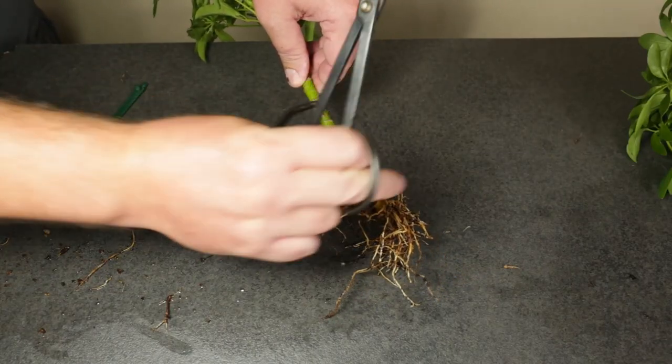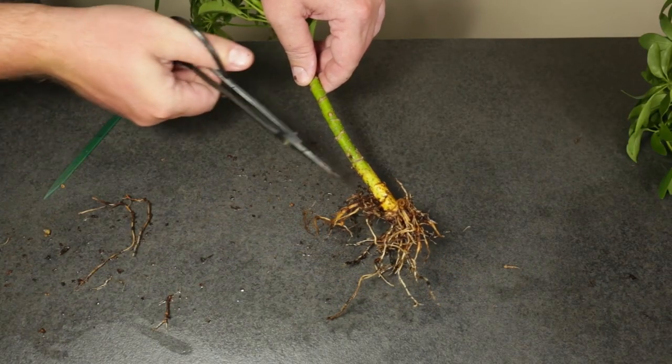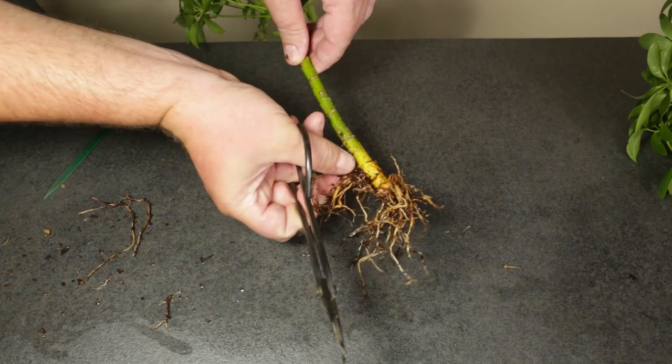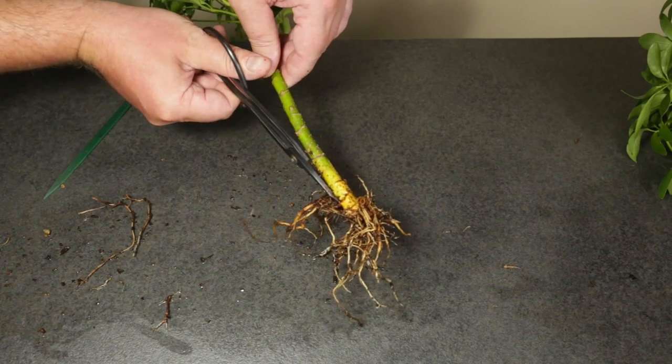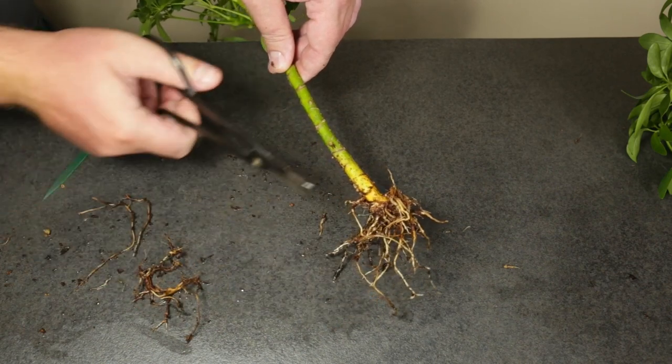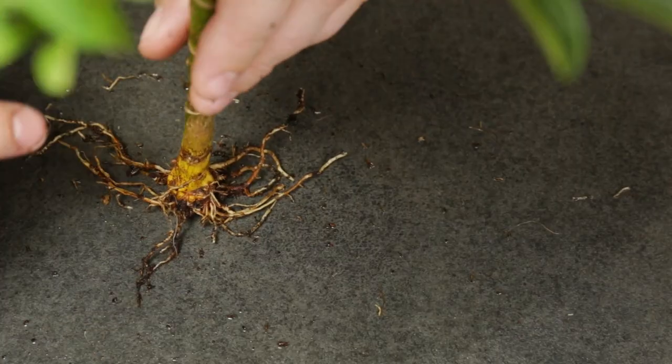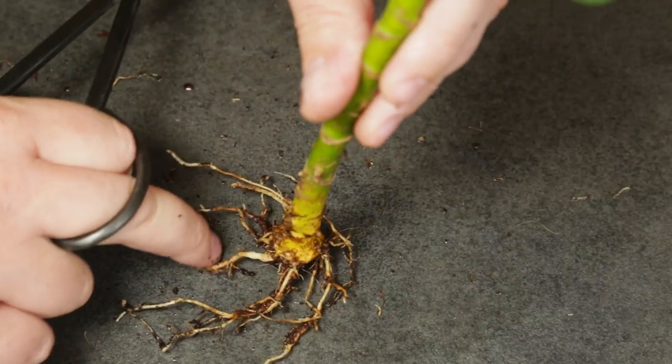I prune the roots of the second Schefflera in a very similar way. First, all the roots growing too high up on the trunk are removed. And then I cut back the remaining roots to a basic structure.